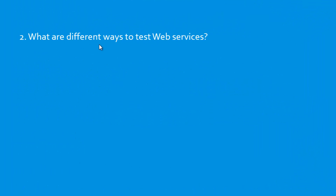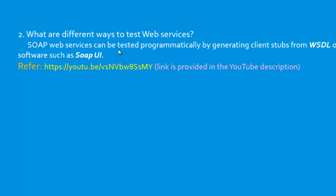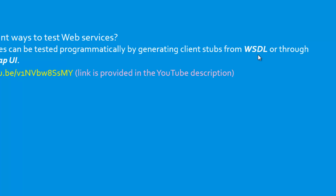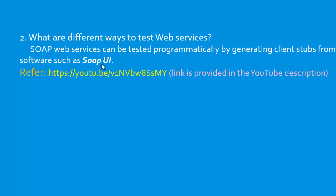Second question: What are different ways to test web services? SOAP web services can be tested programmatically by generating client stubs from WSDL — WSDL means Web Services Description Language — or through software such as the SOAP UI tool. This is a free and pro version tool for testing web services. For testing using the SOAP UI tool, refer to the link provided, where I have described how to test the web service using SOAP UI.